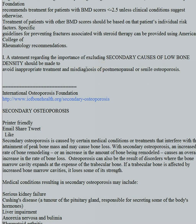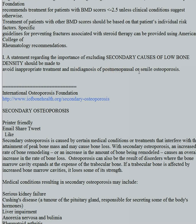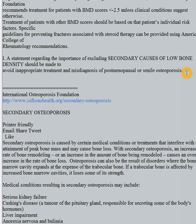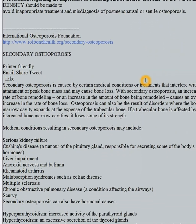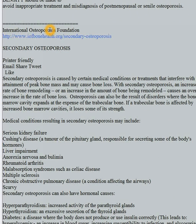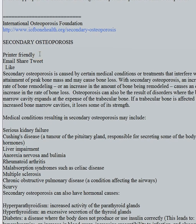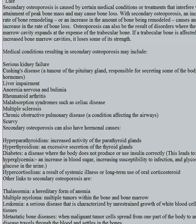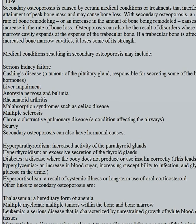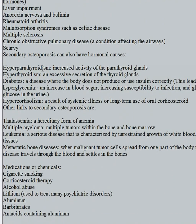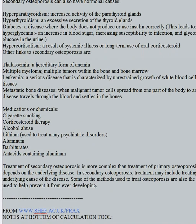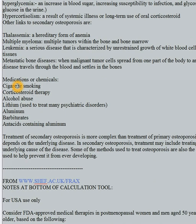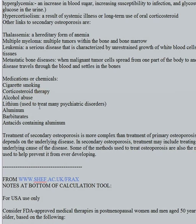People often assume that low bone density means postmenopausal or senile osteoporosis, but patients could have myeloma, bone metastases, renal failure, or some other cause. From the International Osteoporosis Foundation, secondary causes include medical conditions like renal failure, liver failure, Cushing's disease, rheumatoid arthritis, malabsorption, parathyroid disorders, thyroid disorders, diabetes, hypercortisolism, bone conditions like thalassemia, multiple myeloma, leukemia, and metastases, as well as medications or chemicals like cigarette smoking, steroid use, alcohol use, and lithium.